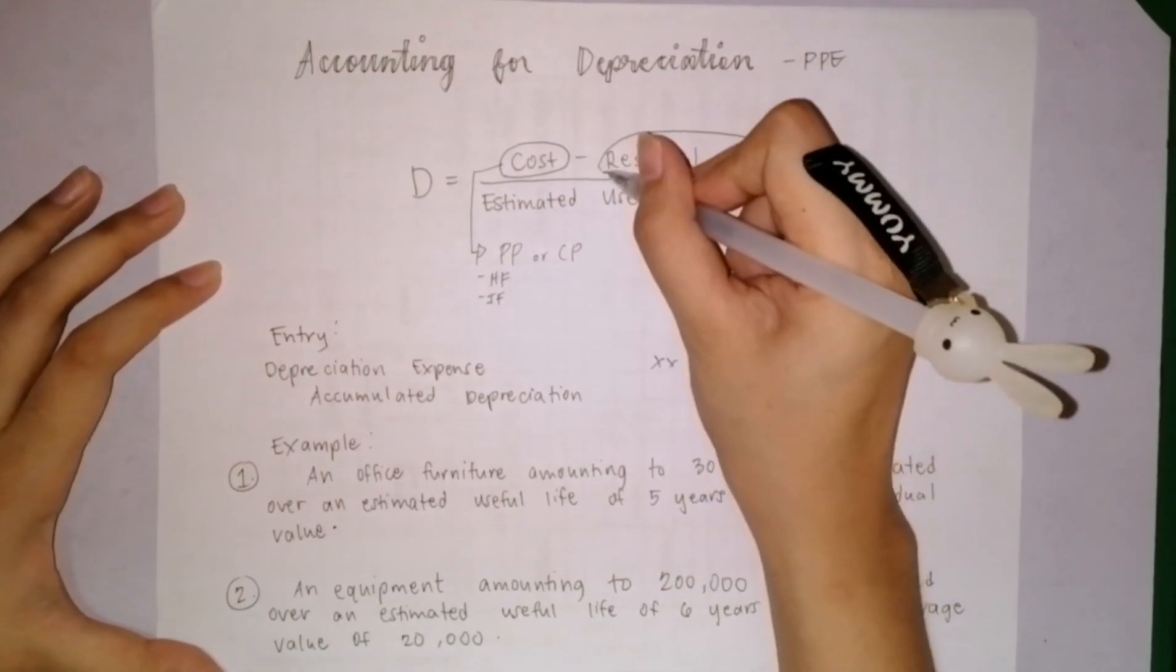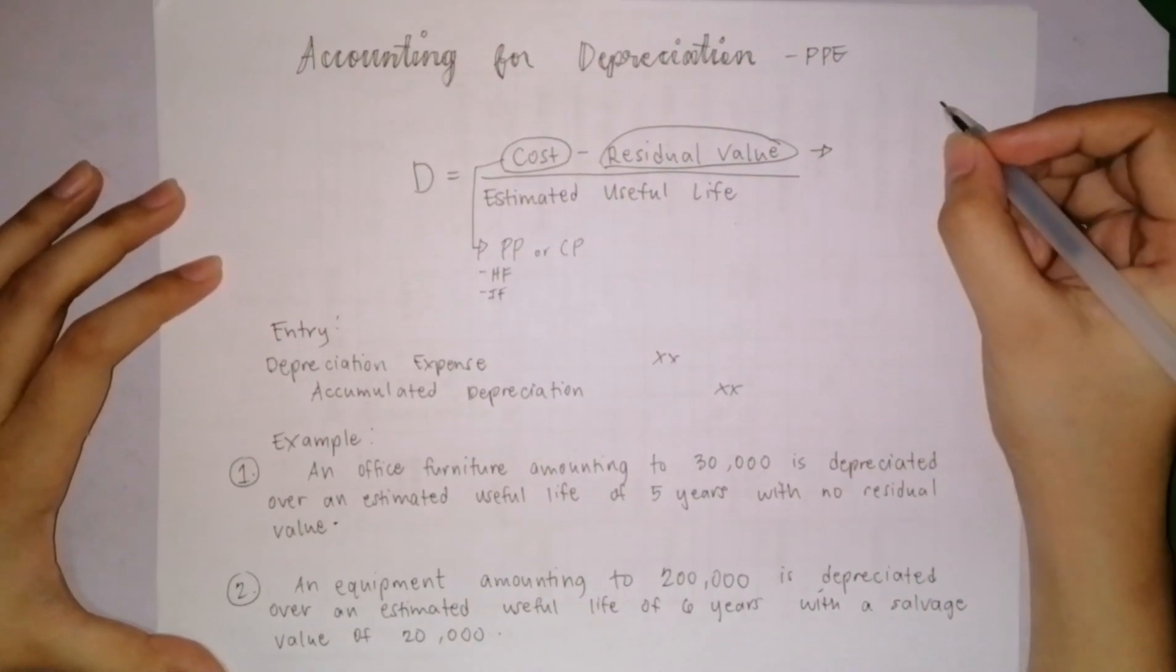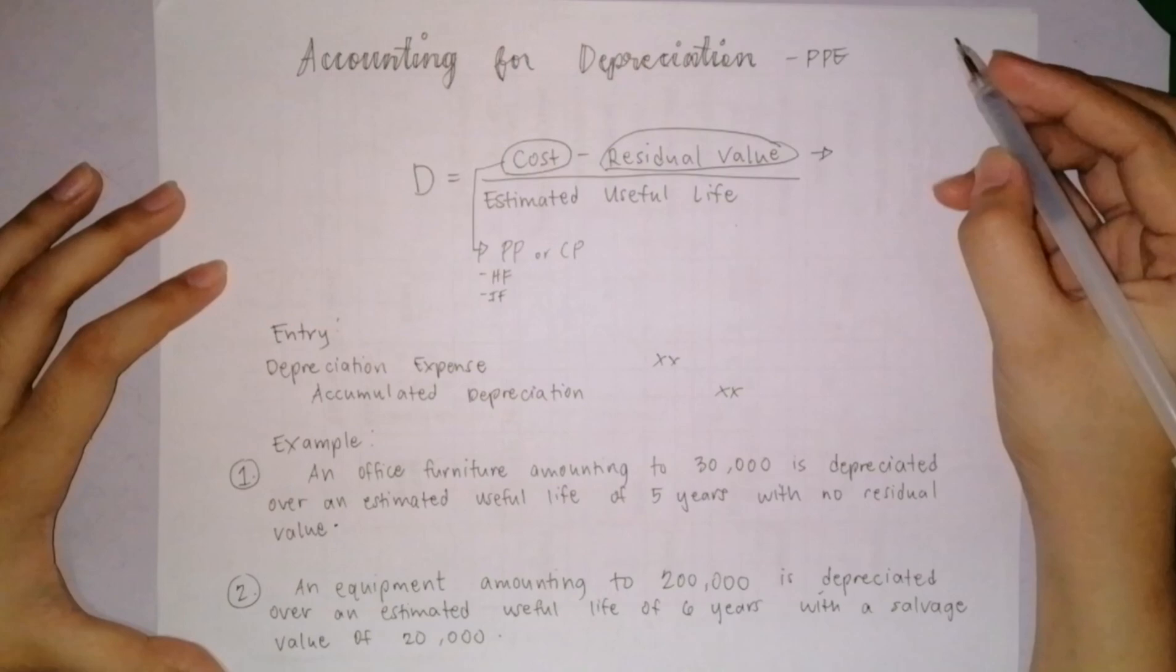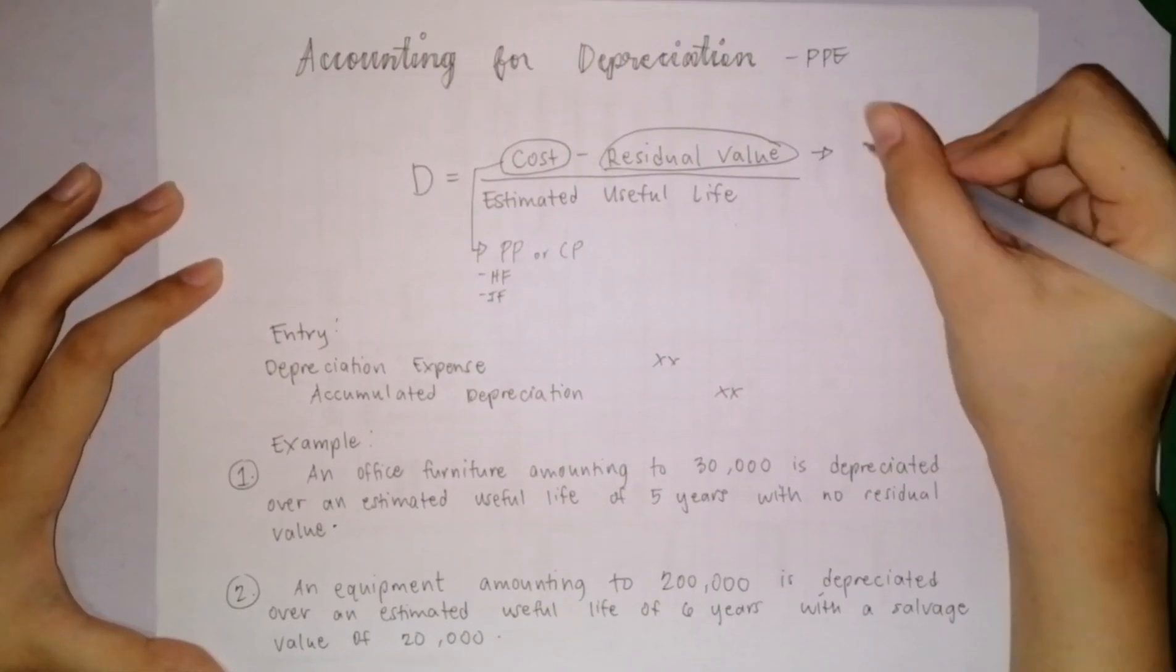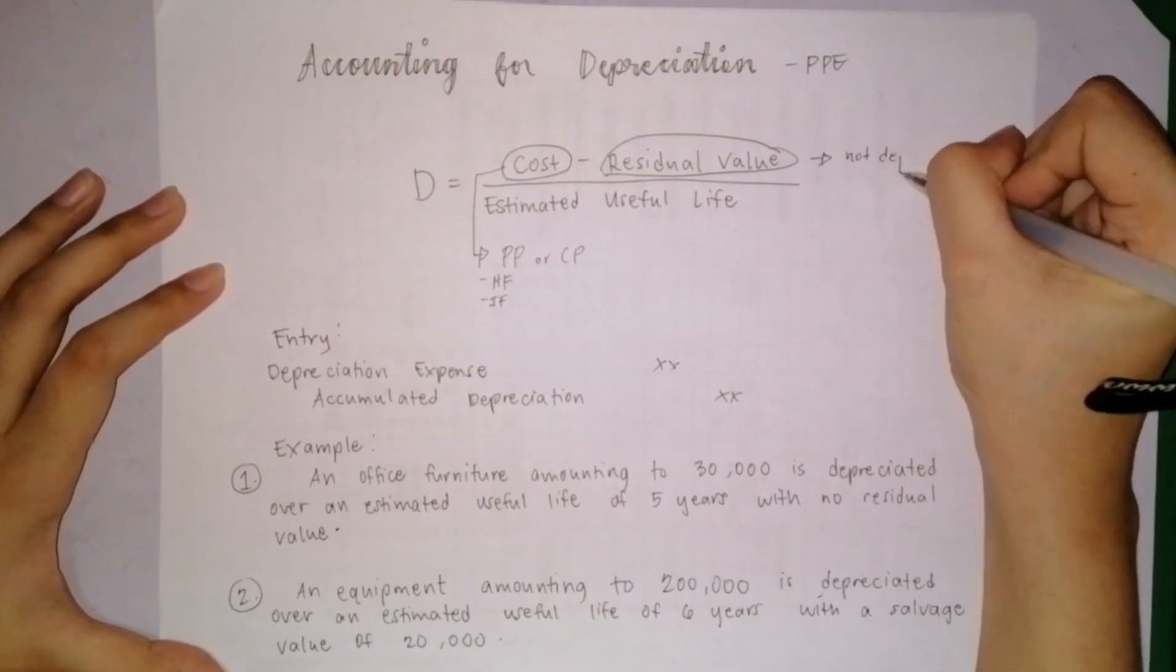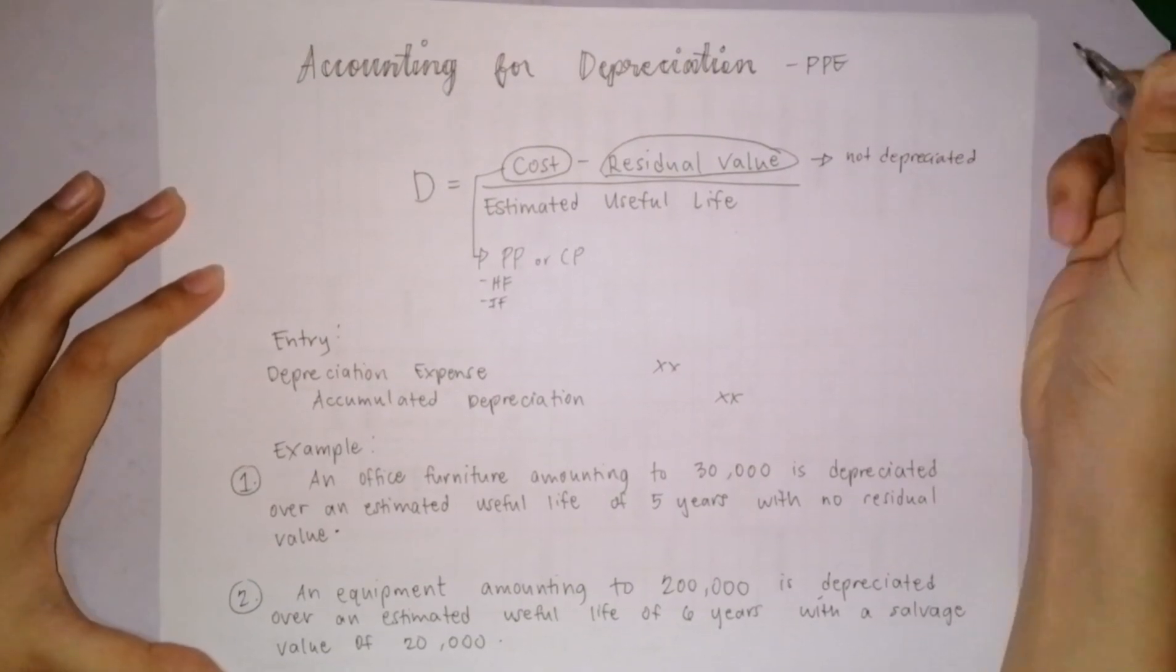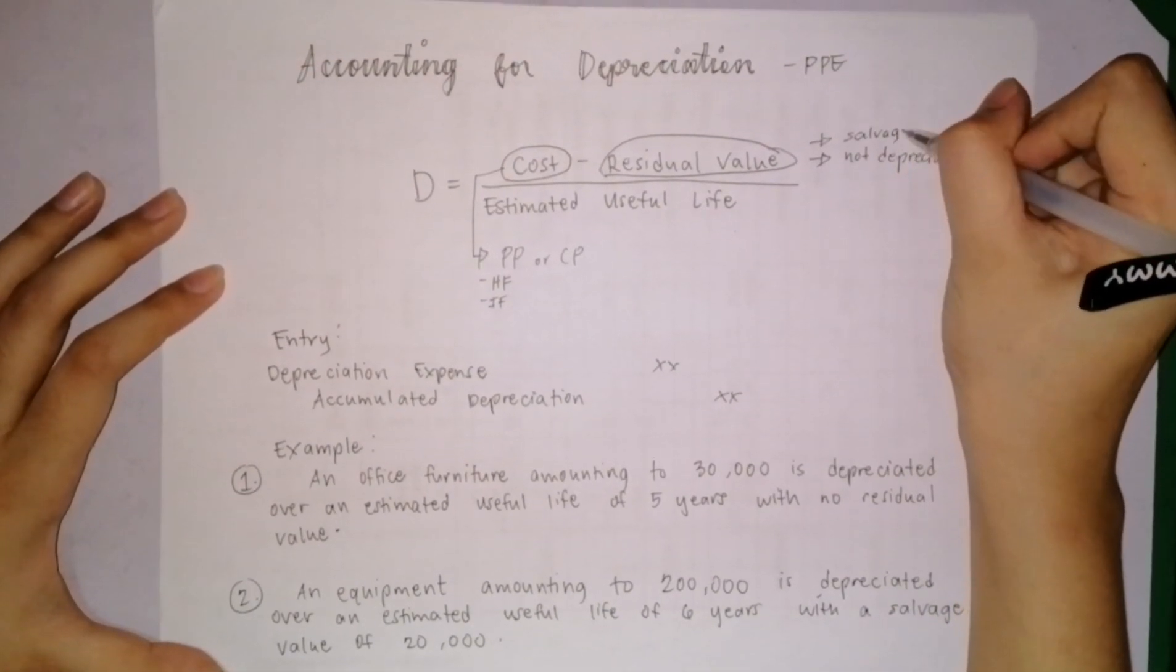Next is residual value. It is the amount of PPE at the end of its useful life. For example, I have an equipment with 5 years useful life. At the end of 5 years, how much can I still sell it for? That is the residual value. It is not depreciated. Other names for residual value include salvage value.